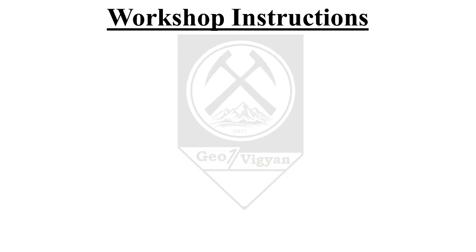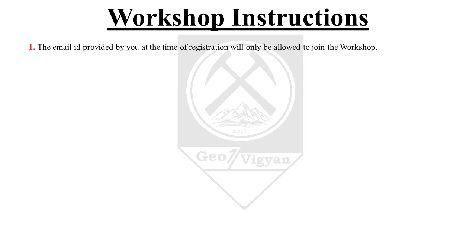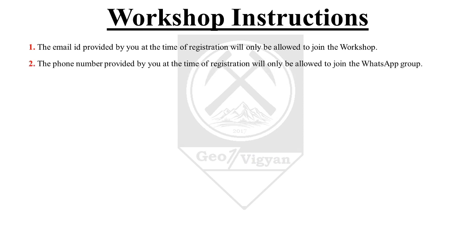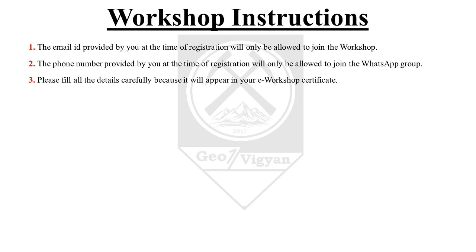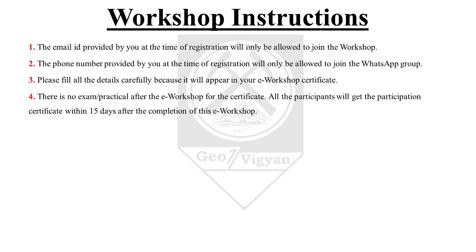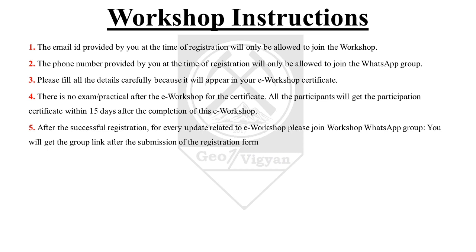Regarding workshop instructions: only the email ID provided at registration will be allowed to join the workshop, and only the phone number provided will be allowed to join the WhatsApp group. Please fill in all details carefully, as they will appear on your e-workshop certificate. There is no exam or practical after the e-workshop to receive the certificate. All participants will receive a participation certificate within 15 days after completion. After successful registration, please join the workshop WhatsApp group — you will receive the group link after submitting the registration form.